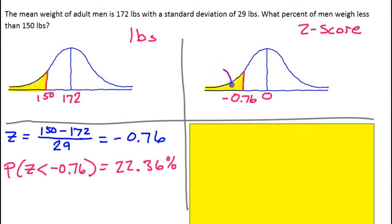That means this yellow area right here represents 22.36% of the data. And that should match these weights over here. So again, this will be 22.36% of the men weigh less than 150.